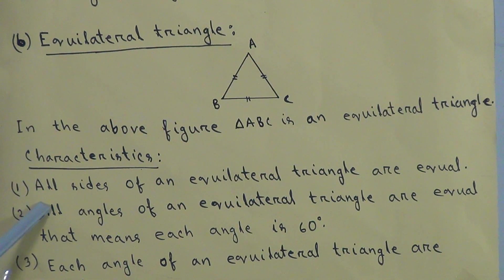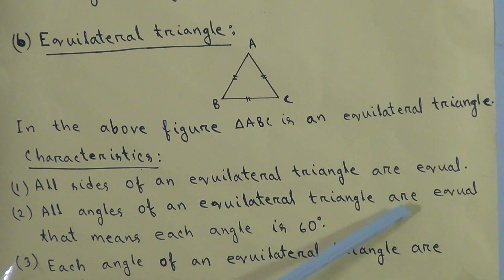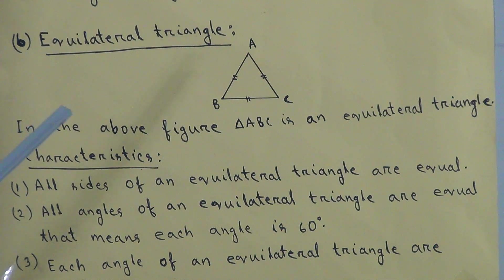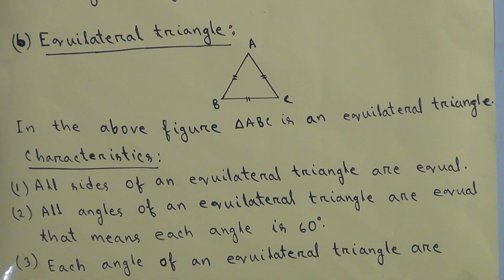Now we write the characteristics of an equilateral triangle. First characteristic: all sides of an equilateral triangle are equal. Second characteristic: all angles of an equilateral triangle are equal, meaning each angle is 60 degrees. In a triangle there are three angles, and since the sum of three angles is 180 degrees and all angles are equal in an equilateral triangle, each angle measures 60 degrees.